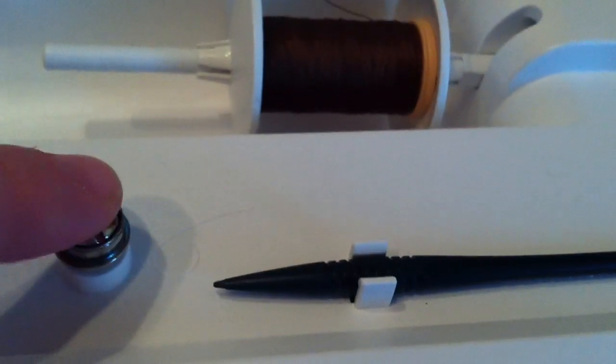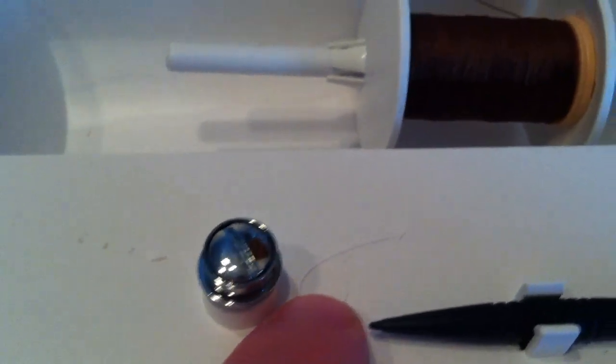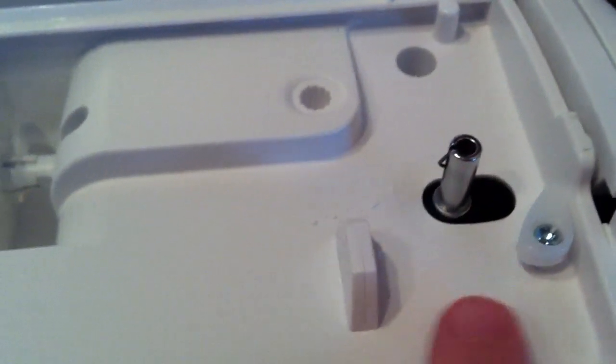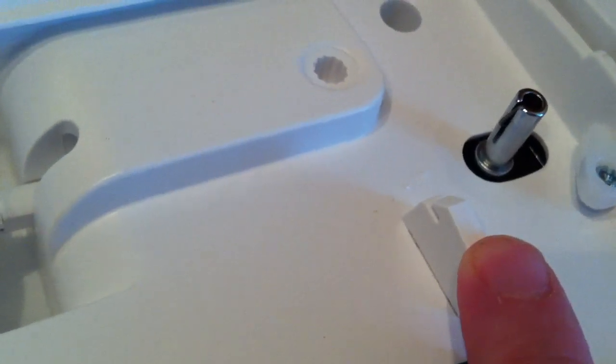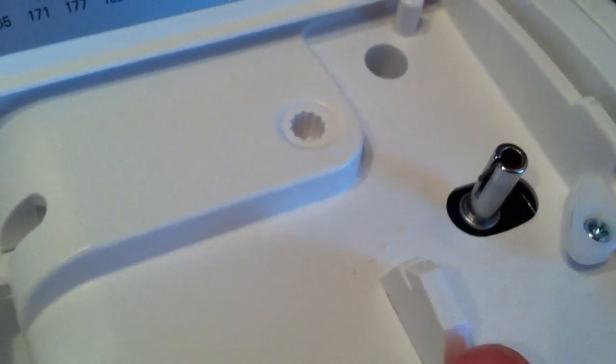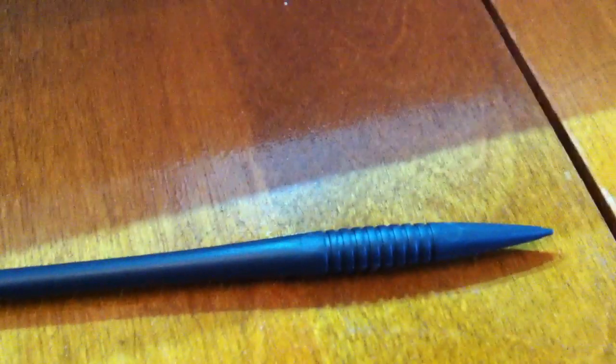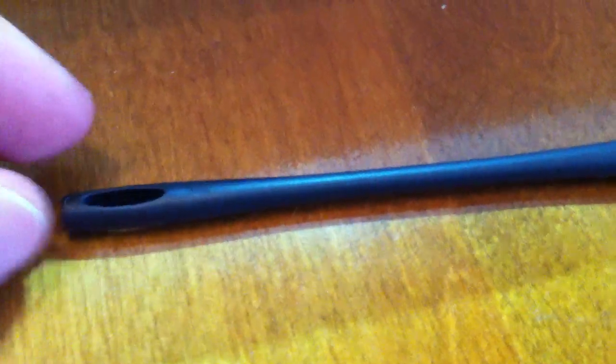And up here we also have the bobbin winder. You put the thread through this when you're winding your bobbin, and this is where you put your bobbin. And here is what I love. This is an extra cutter for the bobbin, so when I take the bobbin off I can just cut the thread here. This is a stylus. It has its own little place here, and it's just a little plastic stylus basically.